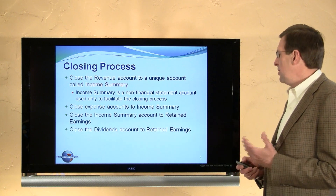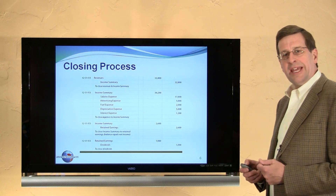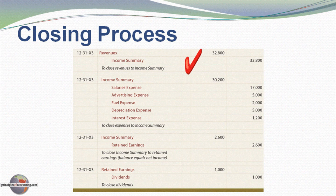Additionally, we would need to close the dividend accounts. Here on the screen is an example of the first journal entry closing revenues. Revenues have a credit balance, so to close them we debit revenues and credit income summary. At this point we'll have $32,800 in the income summary account, reflective of the total revenues.